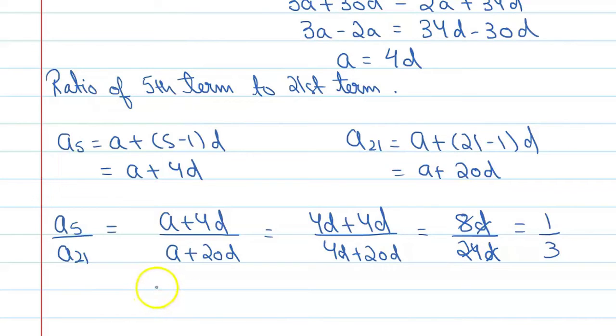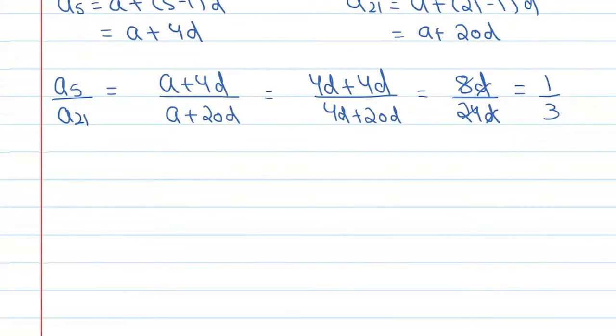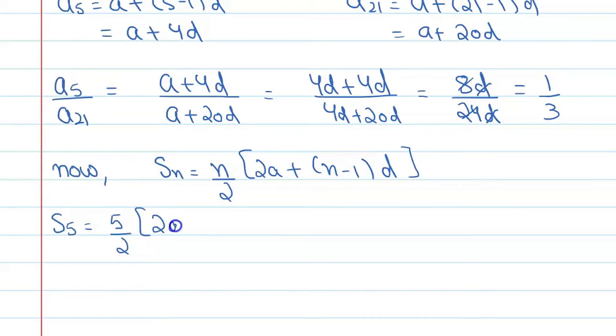Now we will find s5 upon s21. For that we will use a formula of sum of n terms. So what is sum of n terms? Sum of n terms is equal to n upon 2, 2a plus n minus 1 into d.